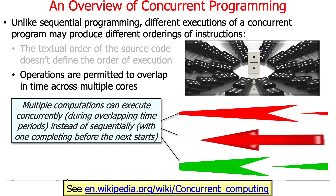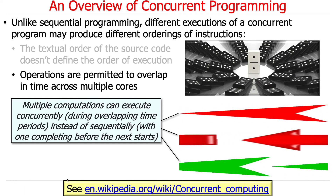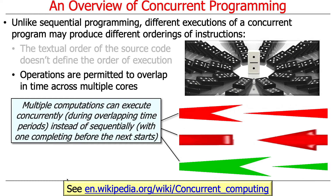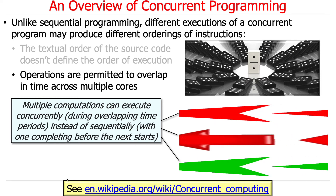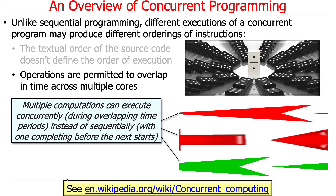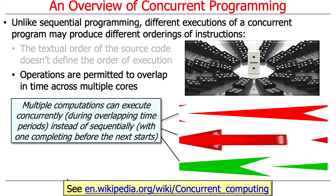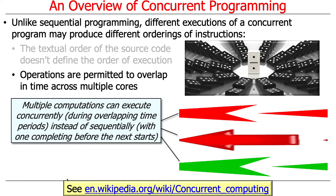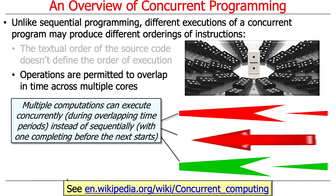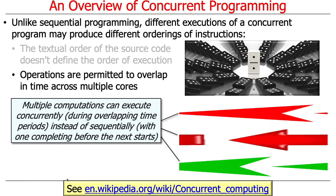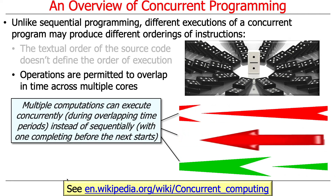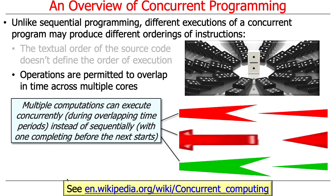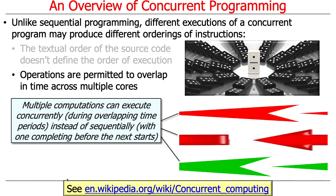Another property is that operations are permitted to overlap in time across multiple cores. With multiple cores, multiple instructions can run and overlap simultaneously. Unlike sequential programming, where execution is lockstep — one operation starts when the previous is done — with concurrent programs different cores can be executing operations that overlap and run at the same time. It's much more flexible and non-deterministic.